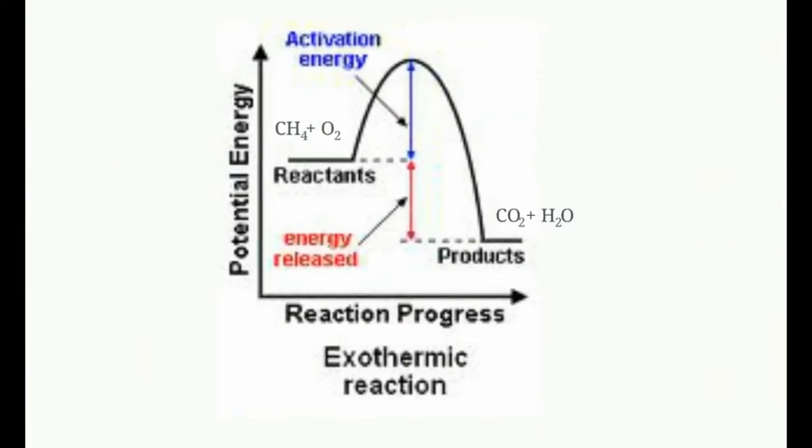If you break a bond, this is called exothermic. You need to know exo and endo. Exo means outside, endo means inside. If energy exits a reaction, it releases energy. What you see up there is a combustion reaction — you actually did this in the lab. Every time you lit a Bunsen burner, that's what's happening.